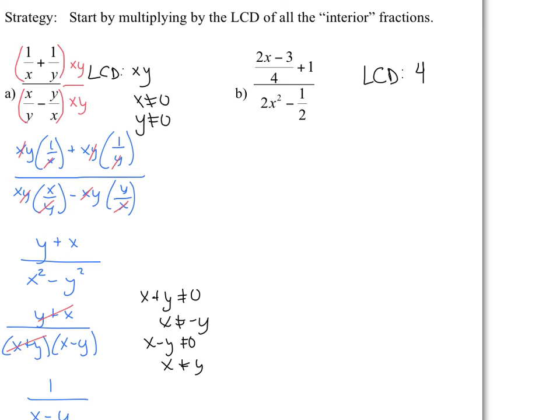well, I hope you think that the lowest common denominator in this case would be simply 4. So I multiply both the numerator by 4 and the denominator by 4. So this 4 is going to multiply this fraction. Notice that the 4 cancels out. So what you're left with is 2x minus 3. And don't forget, and often people forget, this 4 also multiplies the 1. So you have plus 4.